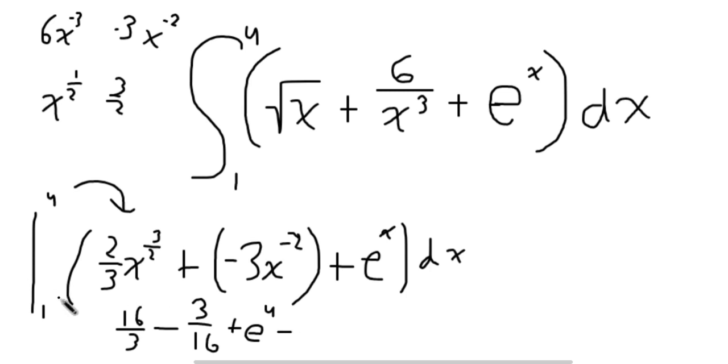But then we subtract by whatever we plug in from 1. So we're going to put parentheses over this. And we're going to plug in 1. 1 to 3 halves is just 1. So we're going to get 2 thirds. Then we're going to subtract again. We're going to get 3 over x to the negative half, which is just 3. And we add e to the x. Now, e to the 1 is just e. So we're going to just add e.